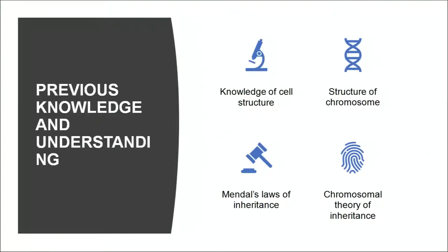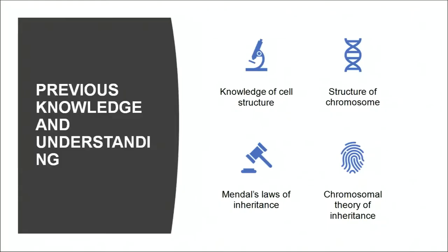Before we take up this topic, we must know about the cell structure. As we know, there are prokaryotic and eukaryotic cells. Prokaryotic cells do not contain a proper nucleus or membranous structures, while eukaryotic cells contain a proper nucleus covered by a nuclear membrane. We should also know about the structure of the chromosome. A chromosome is made up of two chromatids joined through a centromere. In earlier chapters we studied Mendel's laws of inheritance — the law of dominance, law of segregation, and law of independent assortment — and the chromosomal theory of inheritance provided by Sutton and Boveri.